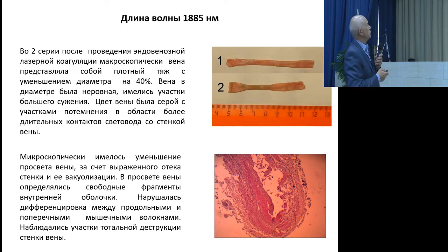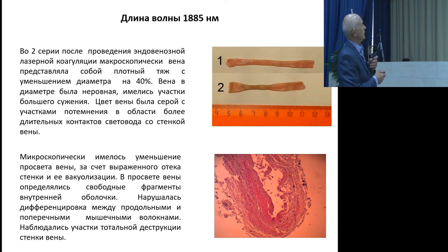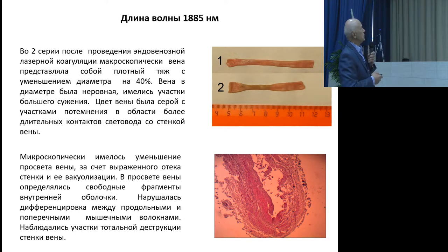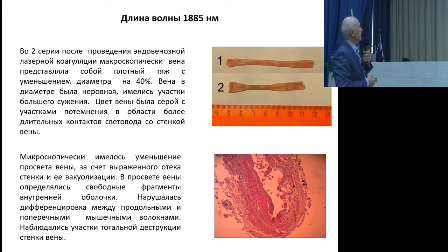In the second experiment, the wavelength is 1,885 nanometers with the same parameters. Looking at the two types of veins — before and after coagulation — in the coagulation area the vein changes its color, becoming more dim, with the diameter shrinking by 40%. This is the area where the vein comes into contact with the light carrier. On microscopic examination of the vein in the area of laser coagulation contact, we can see full destruction of the vein wall. The differentiation of the muscle sheath is lost, there are free fragments, and there are areas of total destruction of the vein wall.